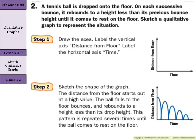Sketch a qualitative graph to represent the tennis ball situation. Our first step is labeling our axes: time is independent so it goes on the x-axis, and distance from the floor is dependent on time so it goes on the y-axis. The distance from the floor starts at a high value, falls to the floor, bounces and rebounds to a height less than the original, falls back down, goes to a height less than the previous, then rebounds a bit less each time until it just comes to rest.